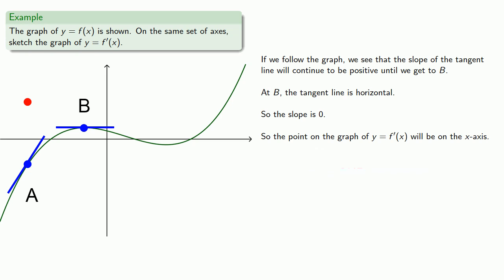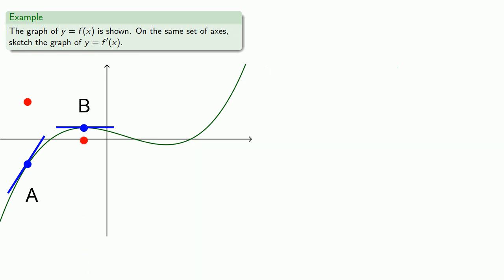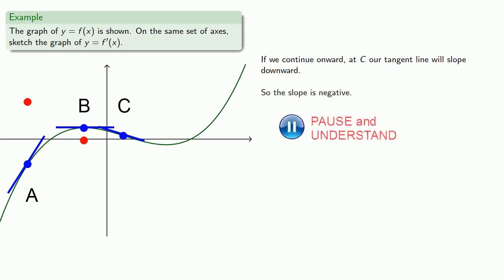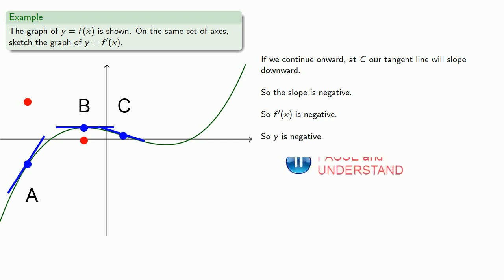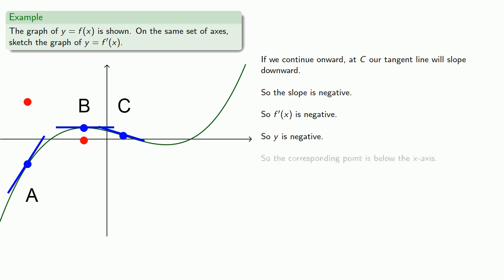And so we'll draw the point. If we continue onward, at c, our tangent line will slope downward, so the slope is negative. So f prime of x is negative, so y is negative, and so the corresponding point is below the x-axis.